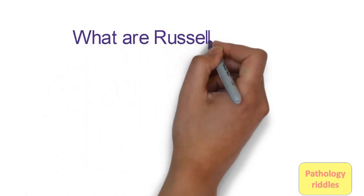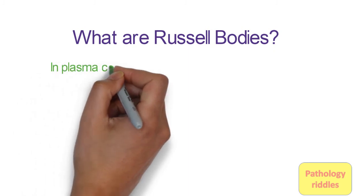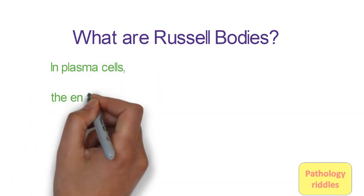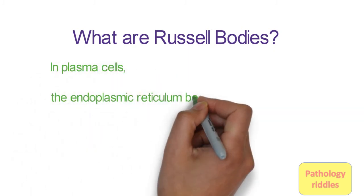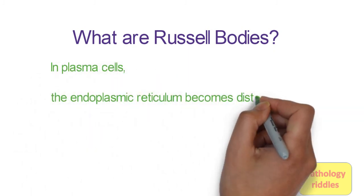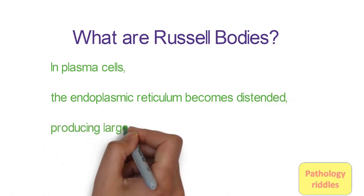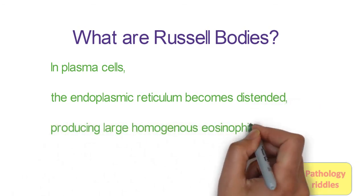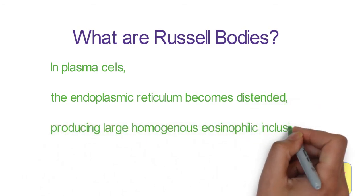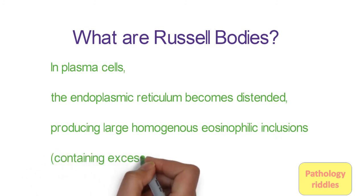Tenth question: What are Russell bodies? Russell bodies are seen in plasma cells. The endoplasmic reticulum becomes distended, producing homogenous eosinophilic inclusions, which actually contain excessive amounts of immunoglobulins.